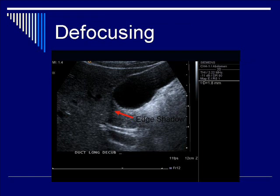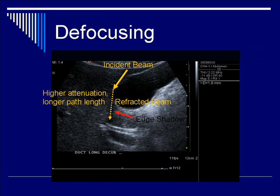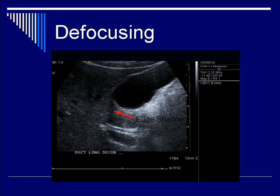Here the gallbladder edge has a dark line distal to the curved surface, as pointed out by the arrow. Reconstructing the mechanism: an incident beam from the transducer traverses the path outlined by the yellow line, hits the curved surface of the gallbladder, becomes refracted, and loses much of its signal. When the signal returns to the transducer for decoding, the higher attenuation due to the extra-long path length traversed by the ultrasound wave produces much less signal than surrounding regions, giving you the dark anechoic shadow known as defocusing. This is a beautiful picture of the gallbladder, with the bile duct visible distal to it.